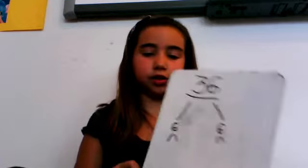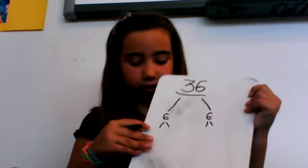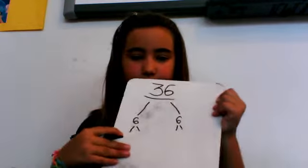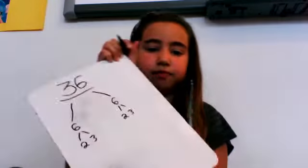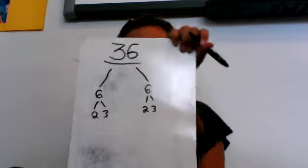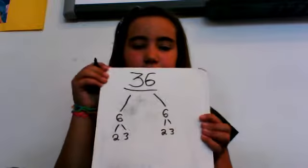Then you draw two lines from that number — if it's a composite number, you continue factoring it. So you've got your prime factorization from that.